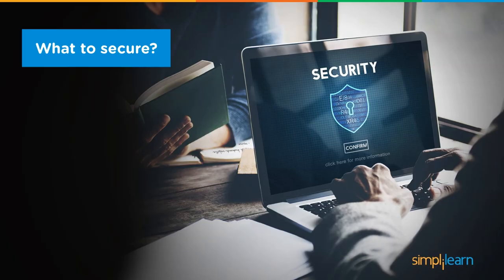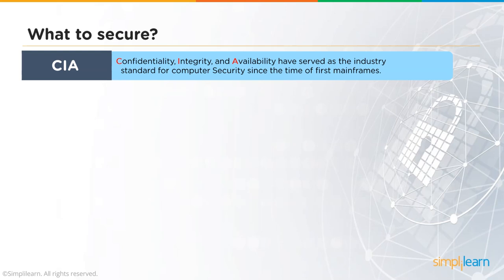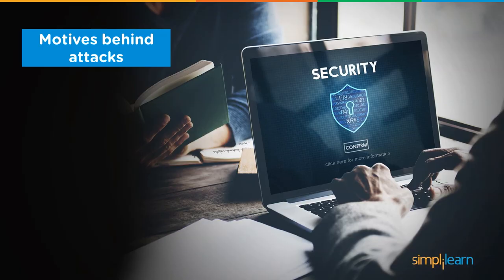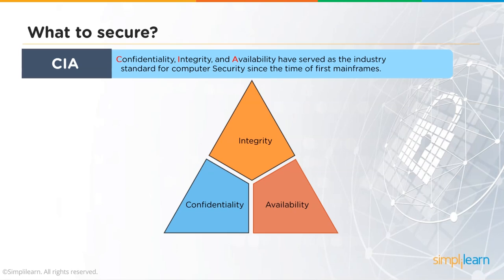When we talk about what to secure, we discuss the CIA Triad — Confidentiality, Integrity, and Availability. This is the foundation of security. Confidentiality means keeping data secret based on its value. Some data is publicly displayed, while other data has proprietary value to an organization. Within an organization, data is classified by hierarchy and roles, and access control lists ensure data is available only to authorized users.